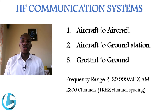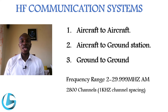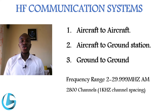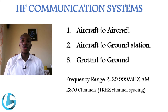The frequency range for HF communication is from 2 MHz to 29.999 MHz. A HF communication system has a channel spacing of 1 kHz, and as a result, a HF communication system has 2,800 channels.